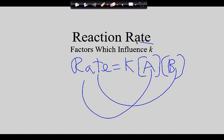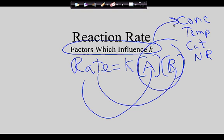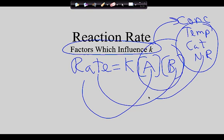So why did I title this day 'factors which influence K'? The idea is this: the rate of the reaction is affected by concentration, temperature, catalysts, and the nature of the reactants. Concentration is right here, and we know that these things also change the rate of the reaction. But where is that represented mathematically in a rate law? In K.